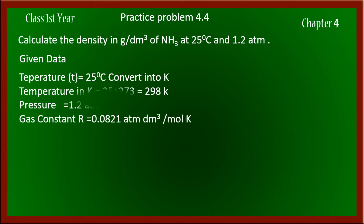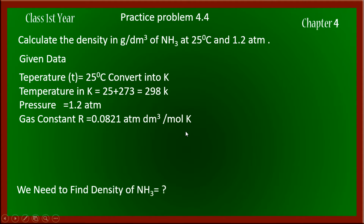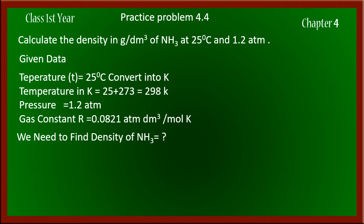The data given includes temperature in centigrade, so we will convert it to Kelvin by adding 273. The temperature in Kelvin will be 298 K. The pressure is 1.2 atm, and the gas constant R is 0.0821 atm·dm³ per mole per Kelvin.